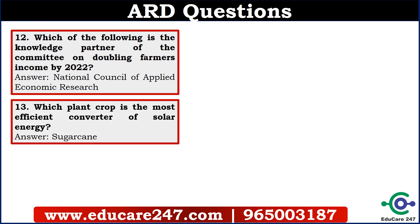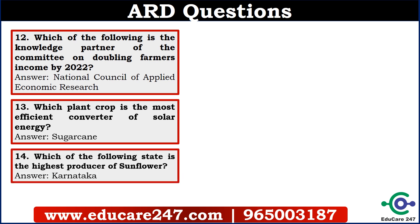Question number 13 is: which plant crop is the most efficient converter of solar energy? The answer is sugarcane. The fourteenth question is: which of the following state is the highest producer of sunflower? It was a simple question. The answer is Karnataka.